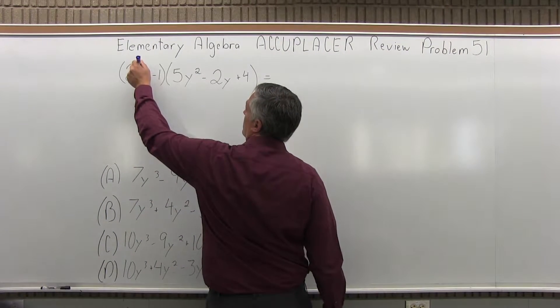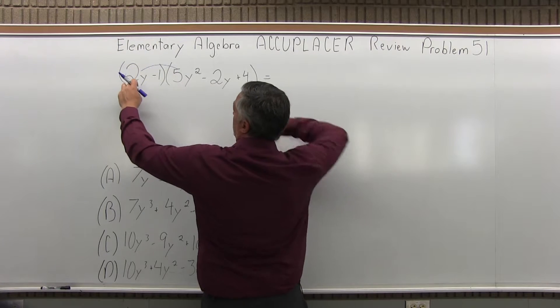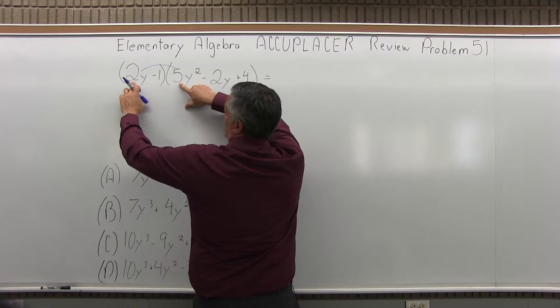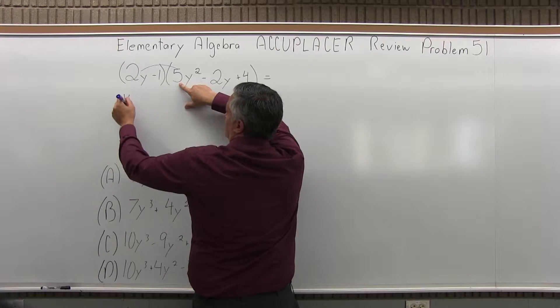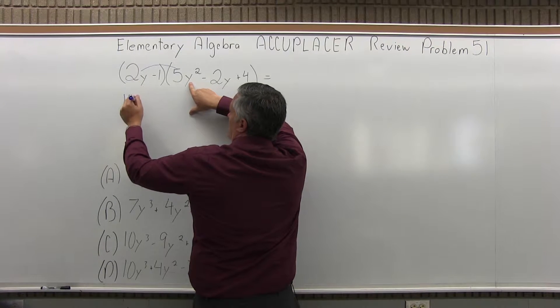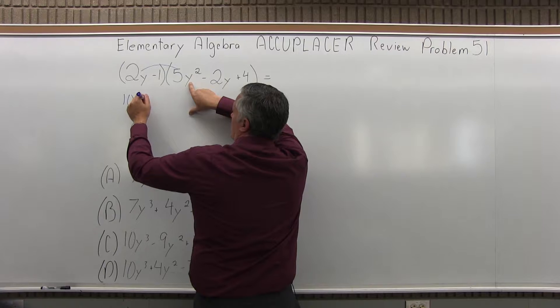So we start off with 2y times 5y squared. First the number is 2 times 5 is 10, and then y times y squared will be y cubed, or y to the third.